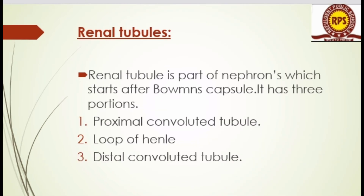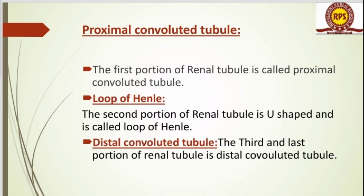The renal tubule is the part of the nephron which starts after the Bowman's capsule. It has three portions: the proximal convoluted tubule, the loop of Henle, and the distal convoluted tubule. These follow the Bowman's capsule in sequence.